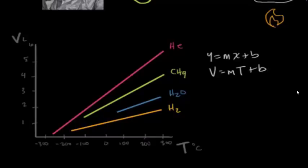Now if you're wondering why the slopes are different, it's because the different gas samples in this example would have different number of moles. And you can also see that the lines are coming to a stopping point at different places. And that's because all of these gases turn into liquid at different temperatures. They all have different boiling points.